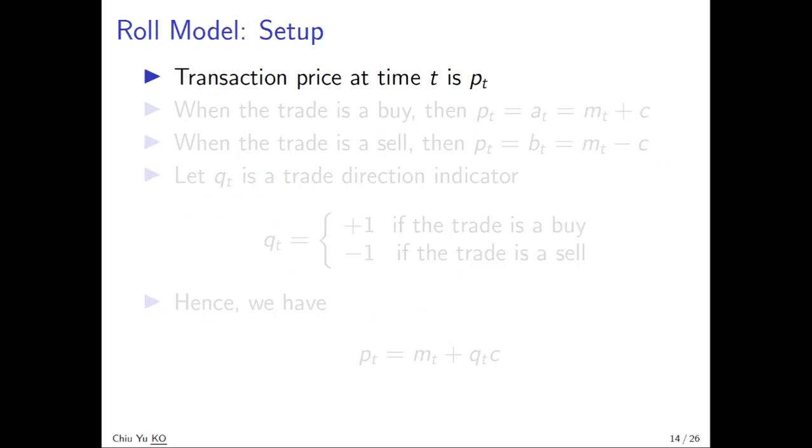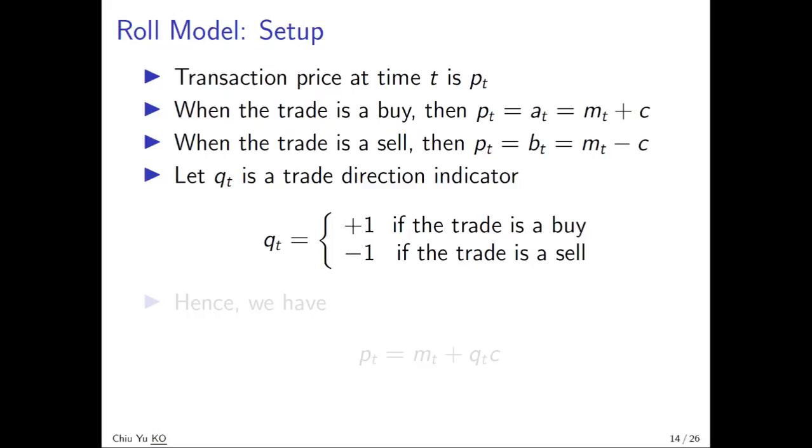Now we look at the transaction price, which is the data we have. Transaction price at time t is denoted as P_t. When we have buy, the price P_t equals a_t. And when we have sell, the price equals b_t. This is rather clumsy, so we want to use a trade indicator, Q_t equal to +1 when there's a buy, -1 when there's a sell. Then we can rewrite P_t as m_t plus Q_t times c.